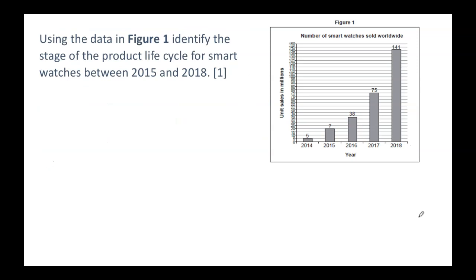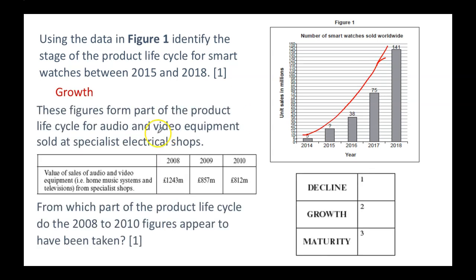Looking at some past paper questions — quite simple ones. There's a diagram about smartwatches asking which stage of the product life cycle they're in. With quite a steep incline, that looks like growth. And an older question on the product life cycle for audio and video equipment — figures going from 1,243 million down to 812 million definitely shows a decline, so the answer would be decline.